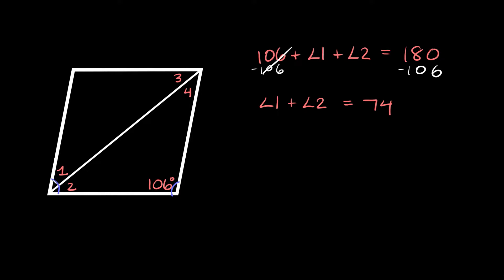This whole angle is 74, but the diagonal cuts it in half, so what's half of 74? That would be 37. So angle one is 37 degrees and angle two is also 37 degrees.